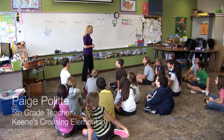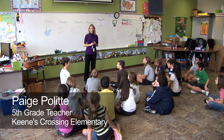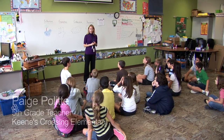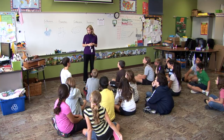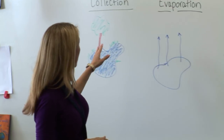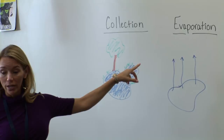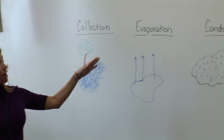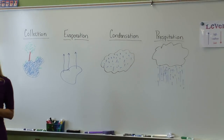Today we're going to continue our discussion of the water cycle. As we've learned, there are four main parts of the water cycle. They're up here on the board: collection, evaporation, condensation, and precipitation.